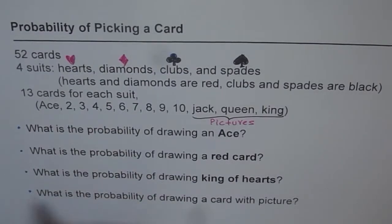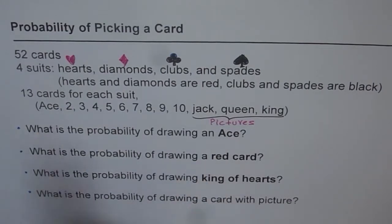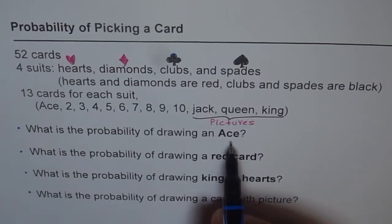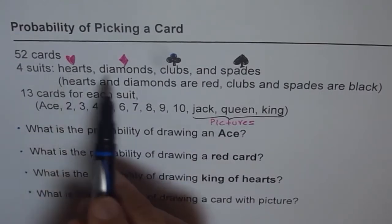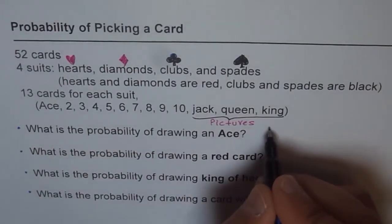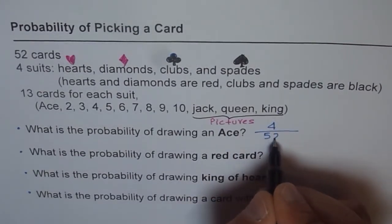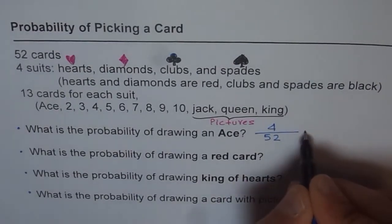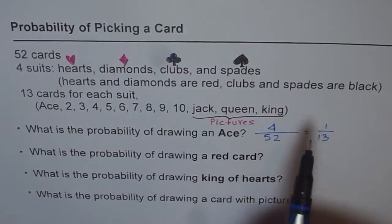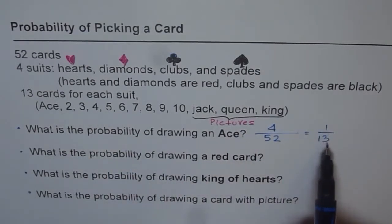The first question: what is the probability of drawing an ace? The ace is ranked as the number one card and has the most significance. There are only four aces in a deck of 52 — ace of hearts, ace of diamonds, ace of clubs, and ace of spades. So the probability is 4 out of 52, which simplifies to 1 over 13.